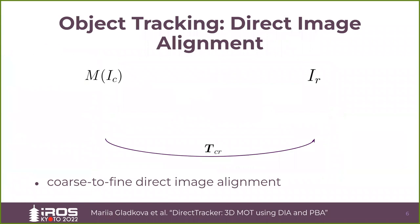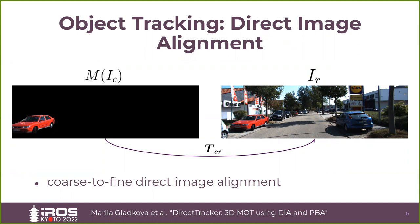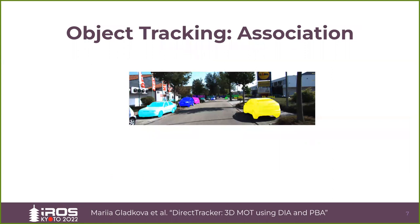Given an RGBD image and object masks in the current frame, we firstly estimate 6 degrees of freedom relative transformation for every object with respect to the reference frame using direct image alignment in a coarse-to-fine fashion, which essentially minimizes the photometric error between the original and warped object regions on an image pyramid. This way, we directly impose a geometric prior of rigid body motion, which, as opposed to pure appearance-based methods, bounds the space of feasible solutions for frame-to-frame object tracking. On the other hand, we enforce short-term photometric consistency, which allows us to prune motion models that are not visually concurrent. Given segmentation masks from the reference image, we can then assign their IDs to the masks in the current frame using the conventional Hungarian algorithm.